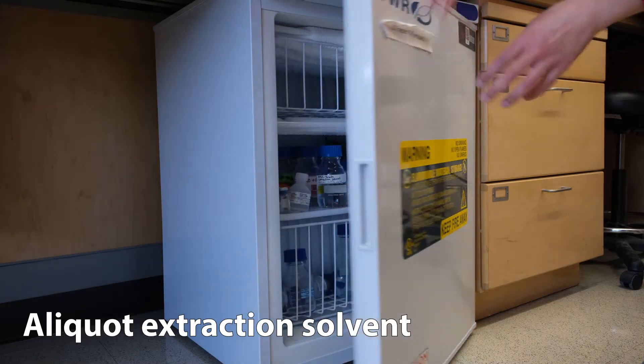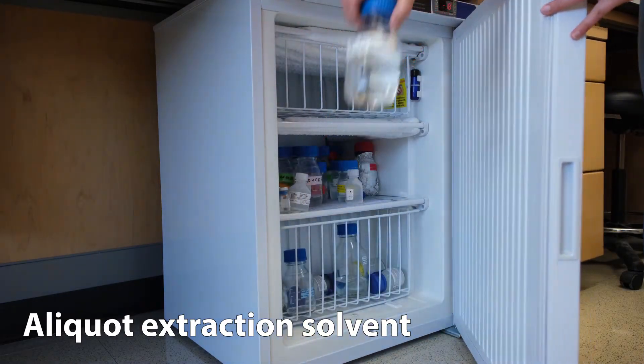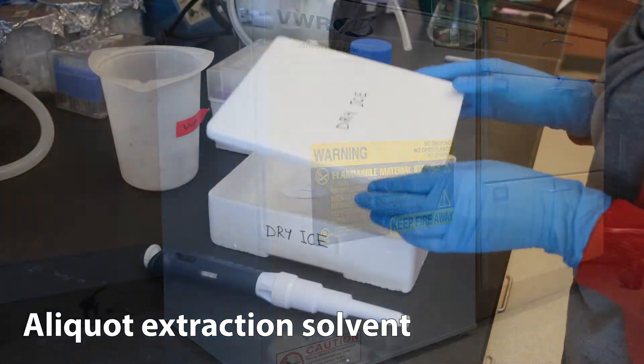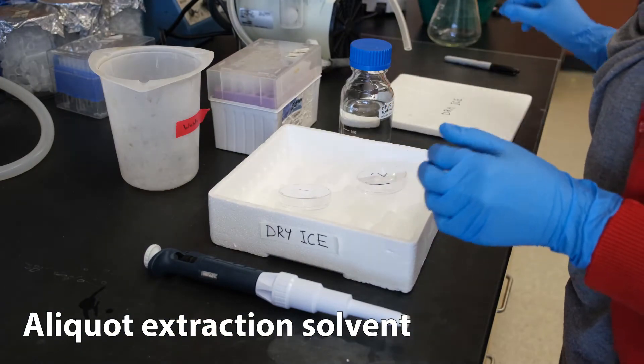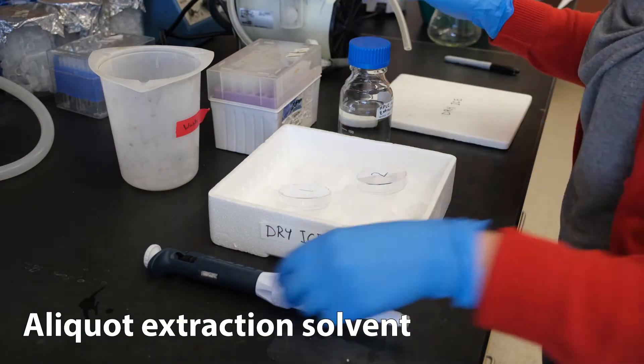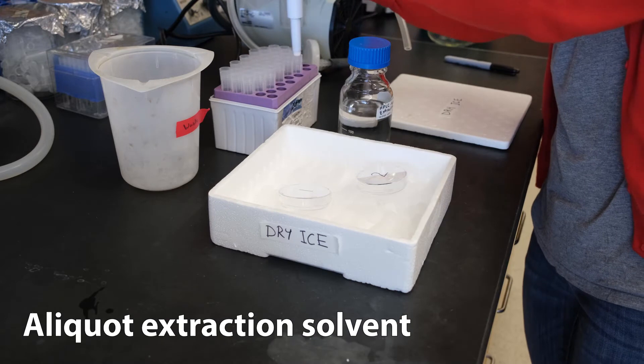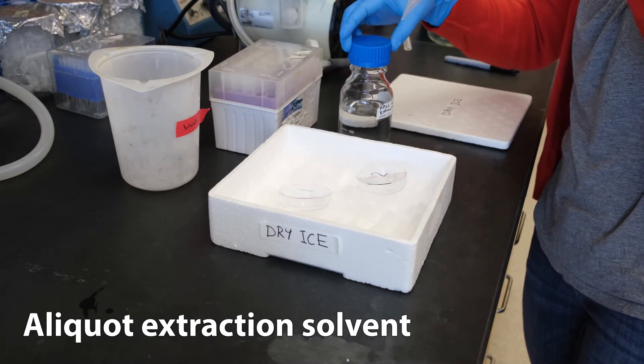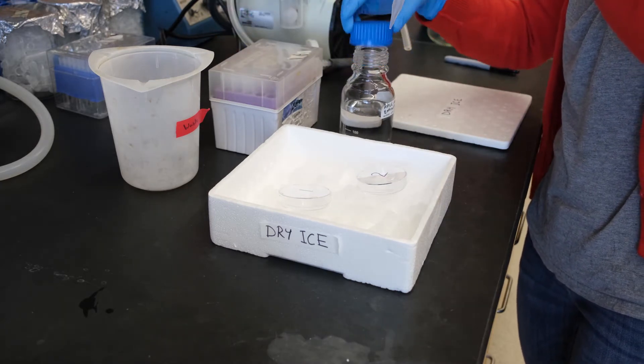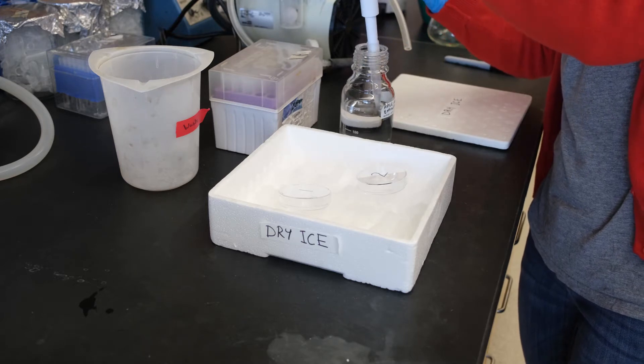Take out your now chilled extraction solvent and aliquot 1.5 ml of extraction solvent into each chilled petri dish. Keep these on dry ice or a minus 80°C aluminum block. The extraction solvent is highly volatile, so you want to keep it cold at all times.